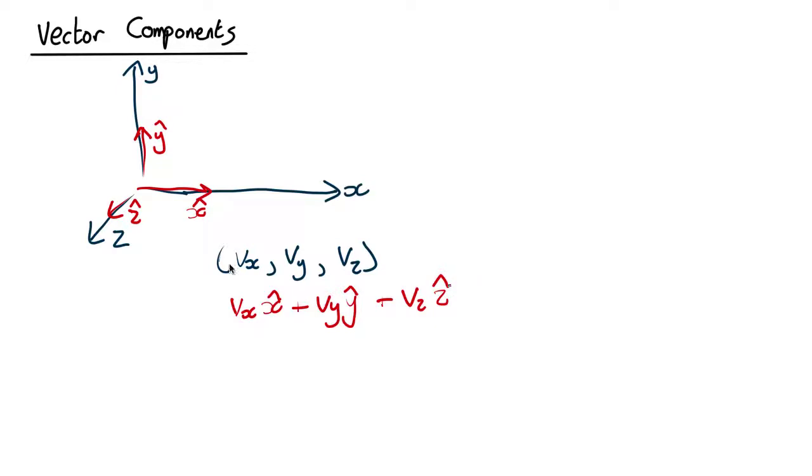There are just different ways of writing it down. This way you have a bracket with three things separated by commas. Here you don't have any commas or brackets, but you have the three unit vectors to tell you which one is which. In this course we will normally use this terminology.